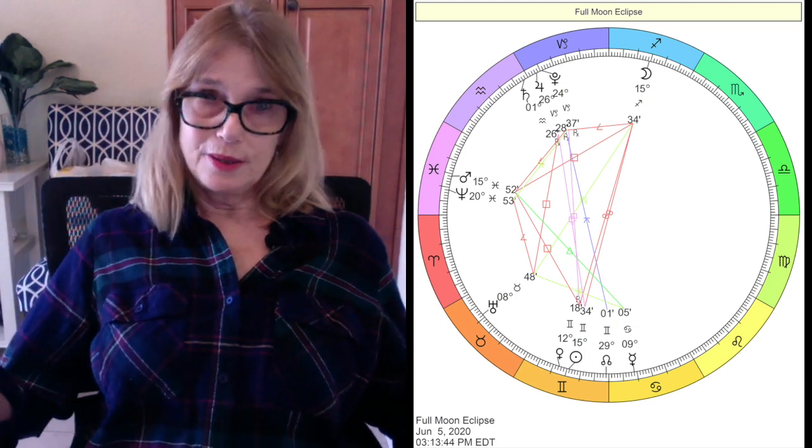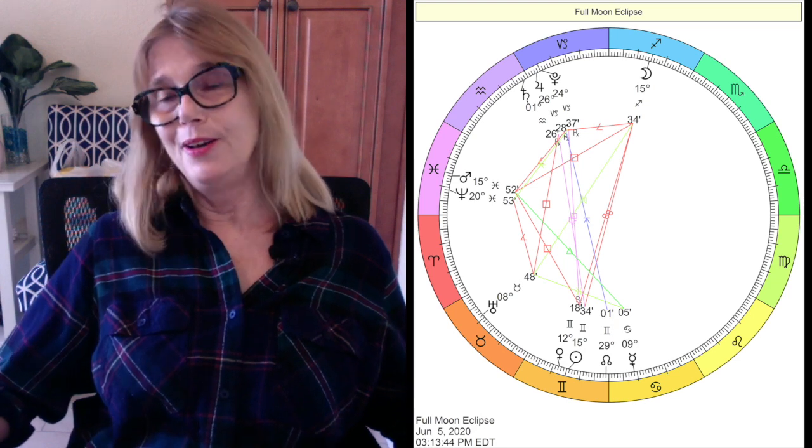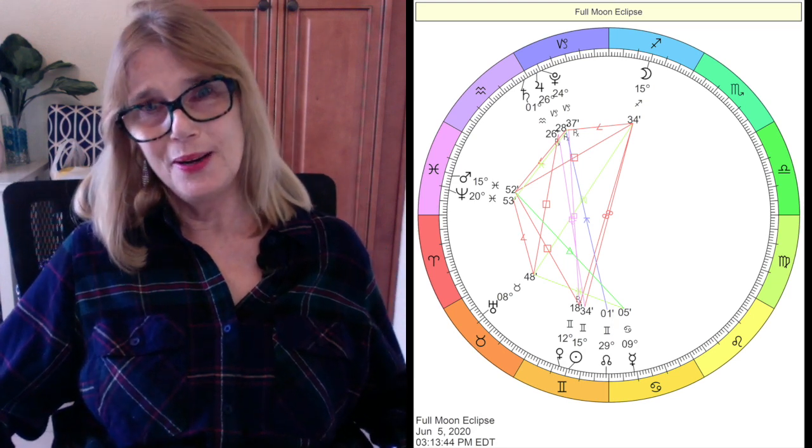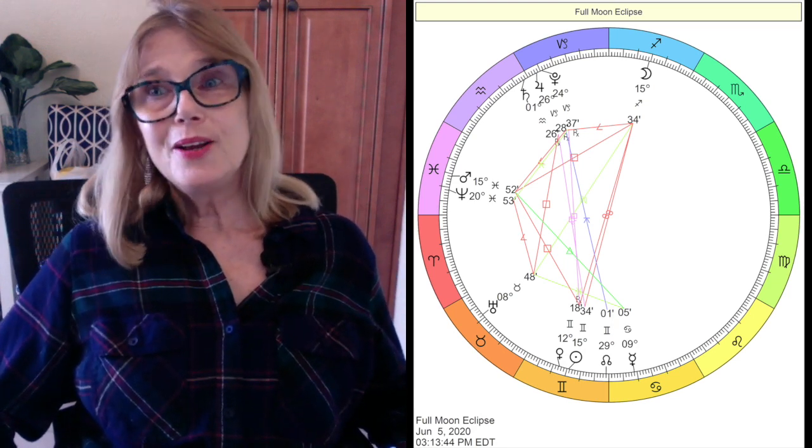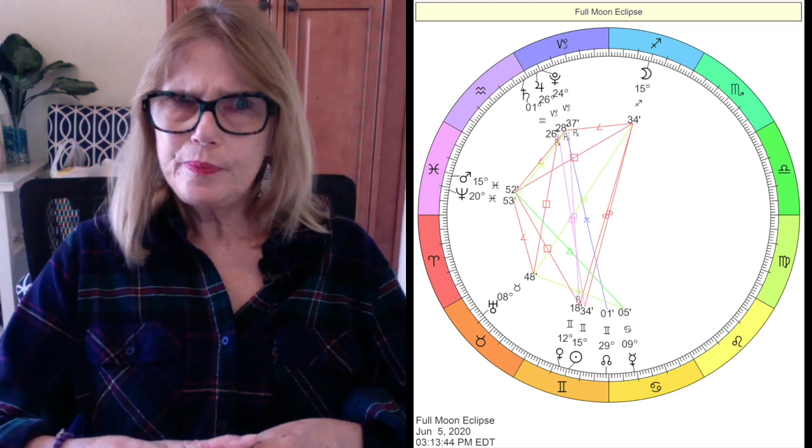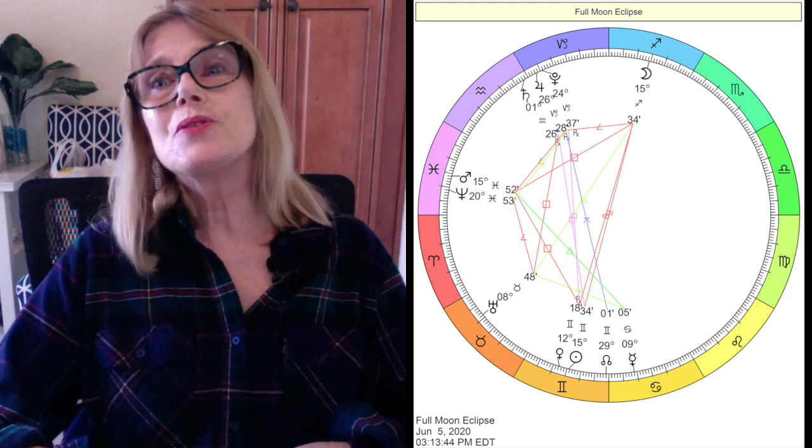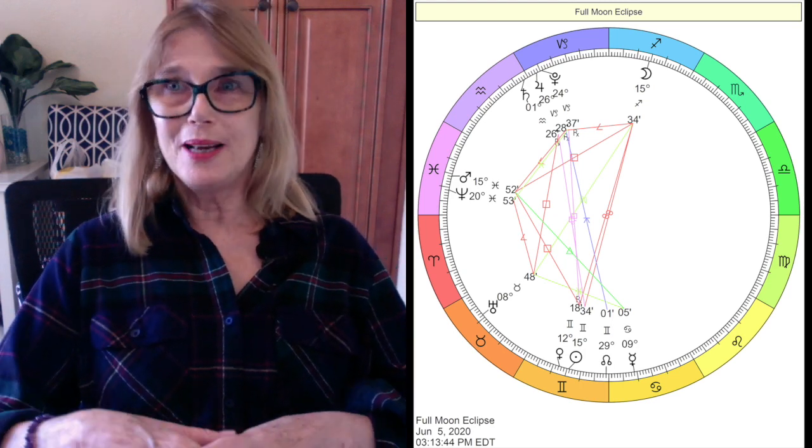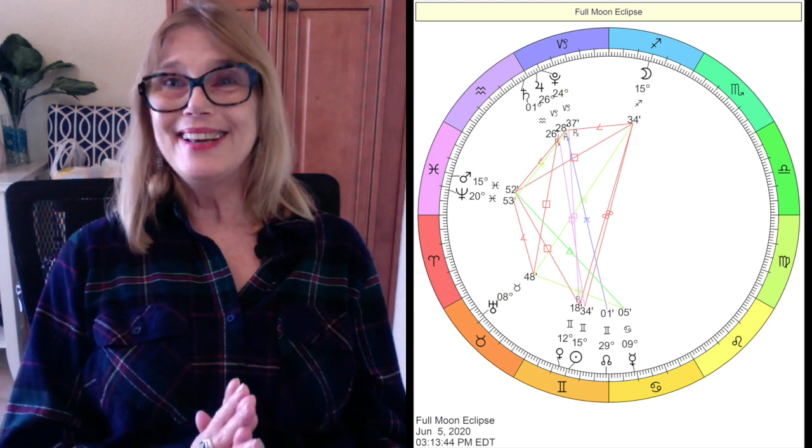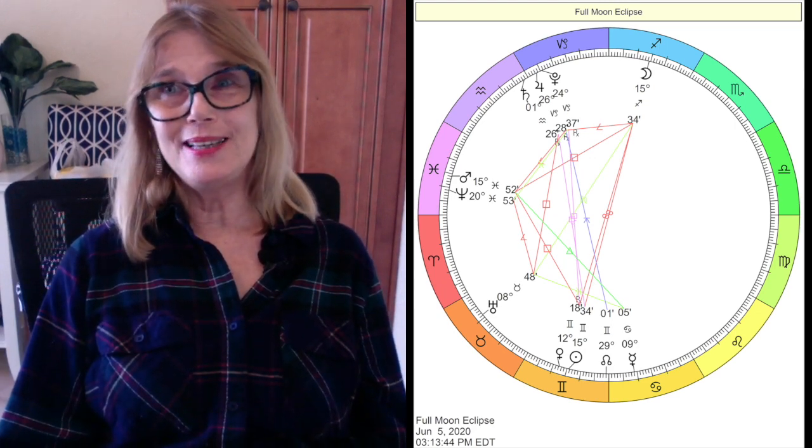We've got Pluto conjunct Saturn in Capricorn still. And Saturn is one degree Aquarius. We're just getting used to this Aquarian age. A lot of us are forming groups and just really trying to do our best to mutate. Mutating would be Aquarius and it also would be Pisces.